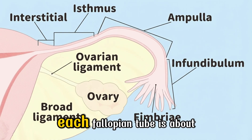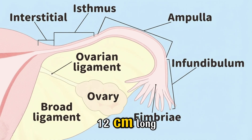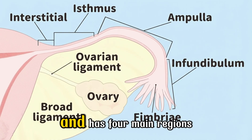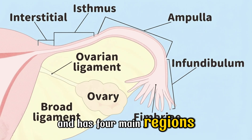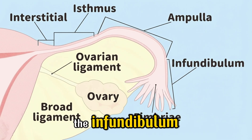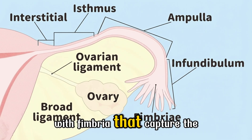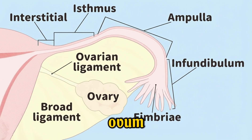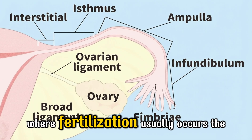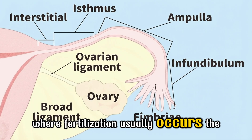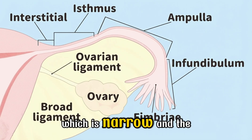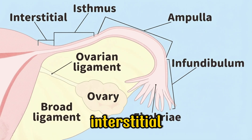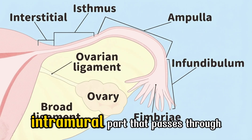Each fallopian tube is about 12 centimeters long and has four main regions: the infundibulum with fimbriae that capture the ovum, the ampulla where fertilization usually occurs, the isthmus which is narrow, and the interstitial or intramural part.